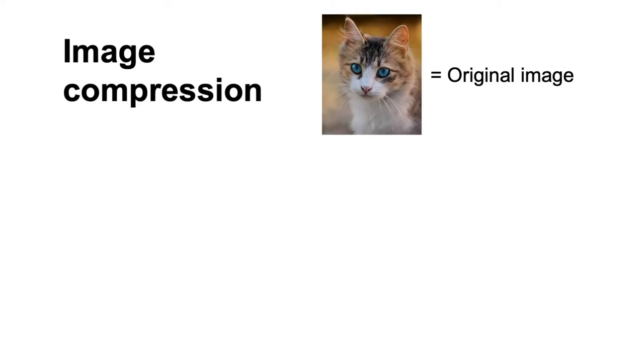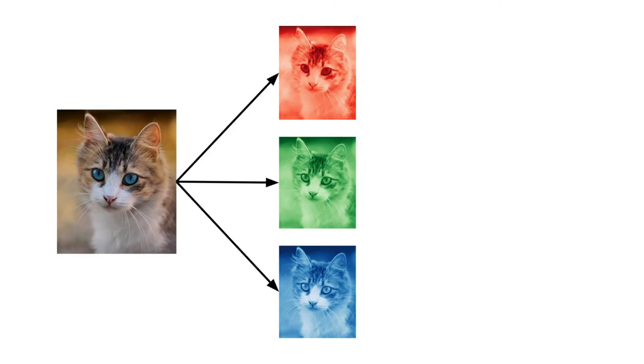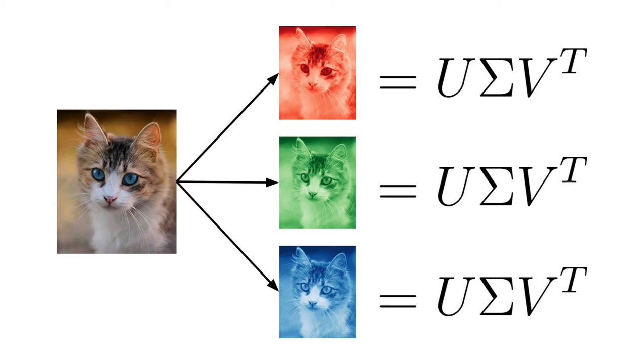Firstly, SVD is widely used in image compression, where the idea is to reduce the dimensionality of the image data while preserving the most important information. This is done by representing the image as a matrix, where each pixel is an element in the matrix, and then applying SVD to the matrix, which decomposes it into three matrices: U, Sigma, and V.